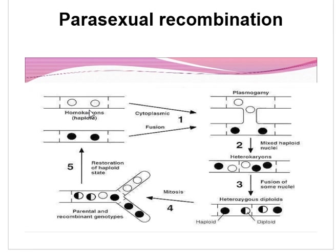In Step 3, multiplication of diploid nuclei takes place. The five types of nuclei multiply at about the same rate, but diploid nuclei are present in much smaller numbers than haploid nuclei. During multiplication of the diploid nuclei, mitotic crossing over may take place, resulting in the formation of new gene combinations. These recombinations, dependent on the existence of heterokaryosis, give the fungus some of the advantages of sexuality within the parasexual cycle.